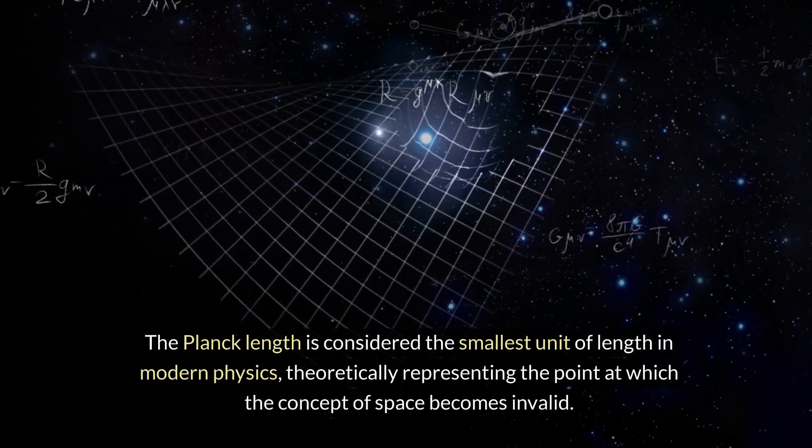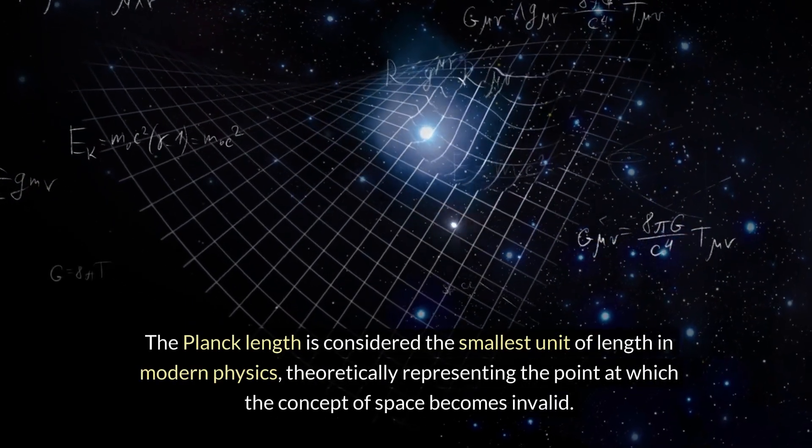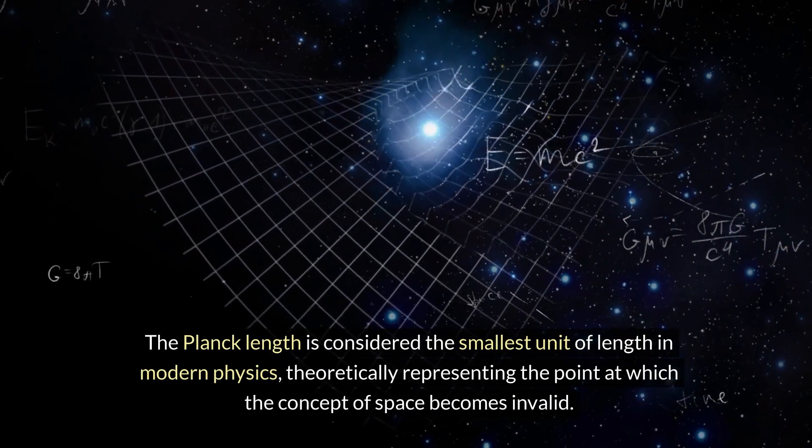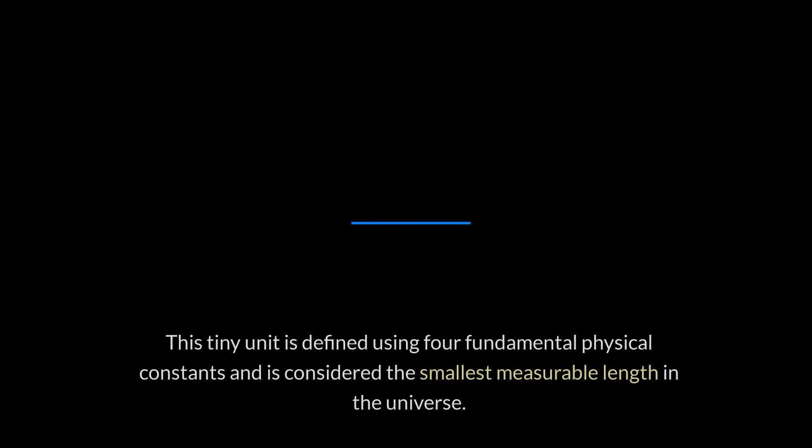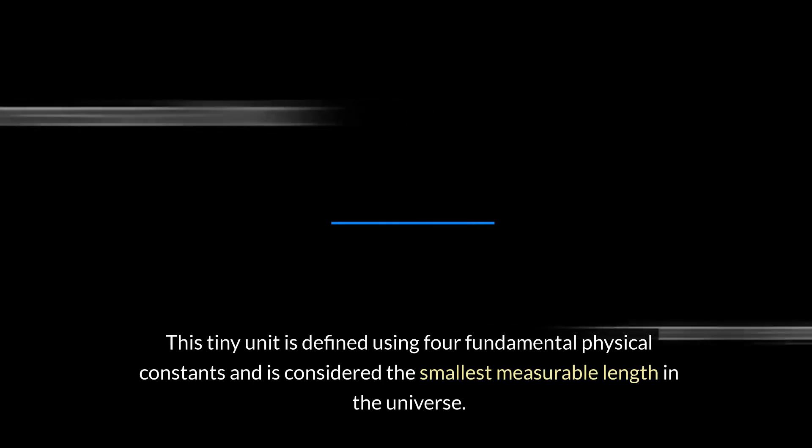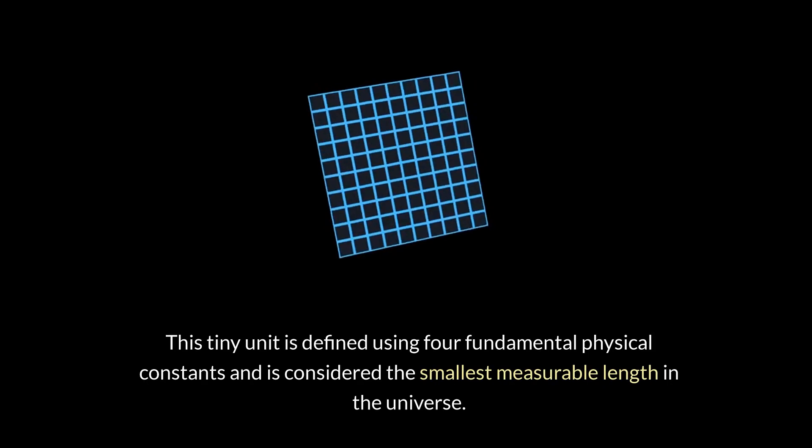The Planck length is considered the smallest unit of length in modern physics, theoretically representing the point at which the concept of space becomes invalid. This tiny unit is defined using four fundamental physical constants and is considered the smallest measurable length in the universe.